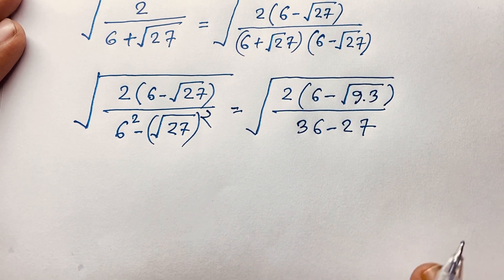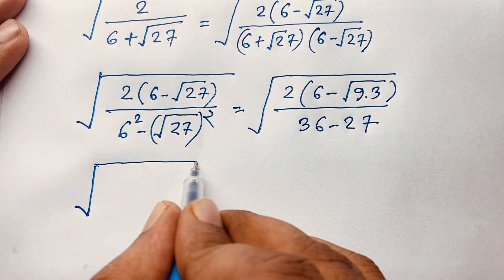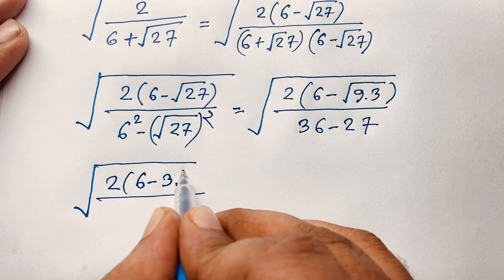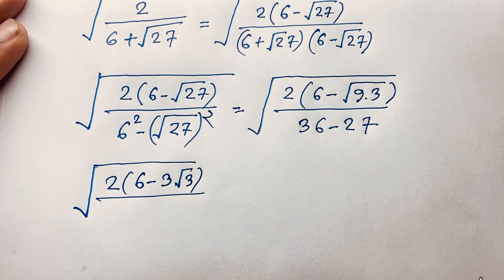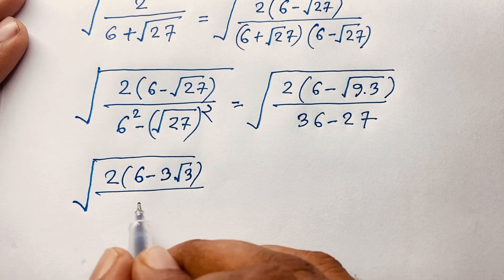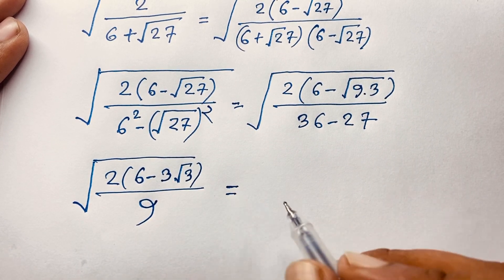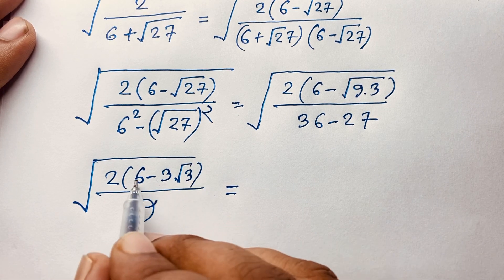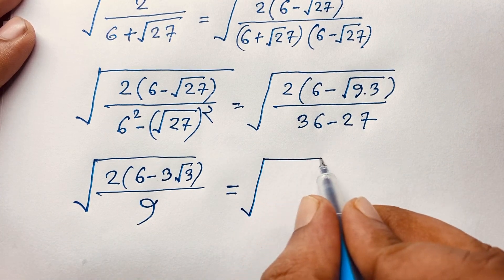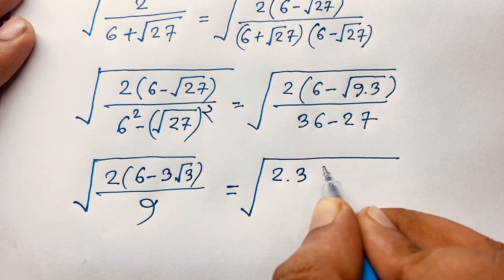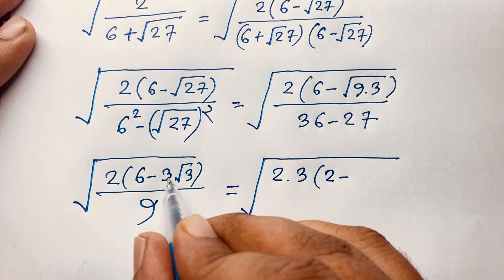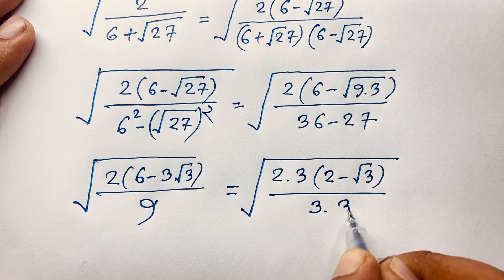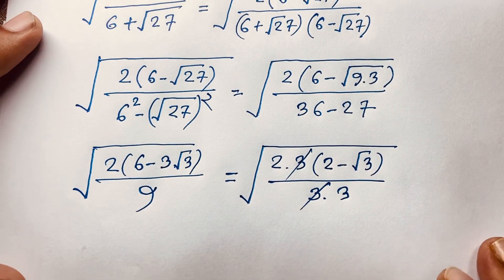Square root 27 equals square root of 9 times 3, which equals 3 square root 3. So numerator is 2 times (6 minus 3 square root 3). The denominator is 36 minus 27 equals 9. Factor out 3 from the numerator: 3 is common, giving 2 times 3 times (2 minus square root 3), over 9, which equals 3 times 3. The 3s cancel.